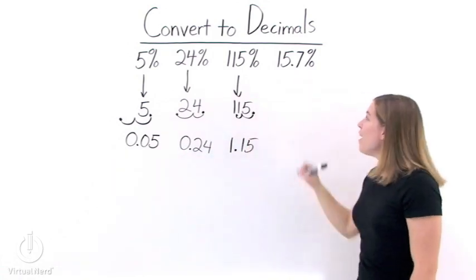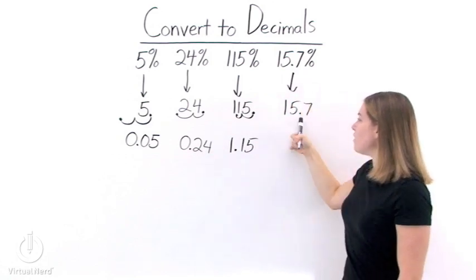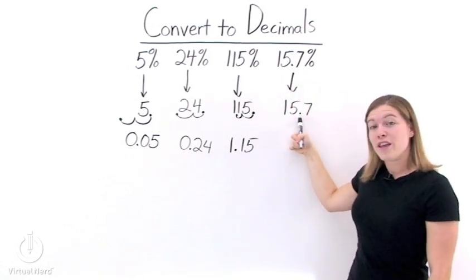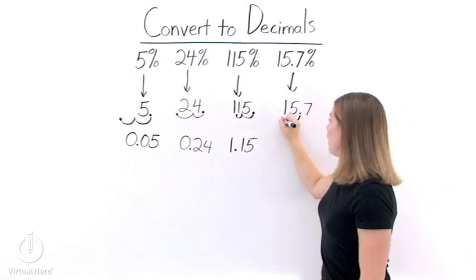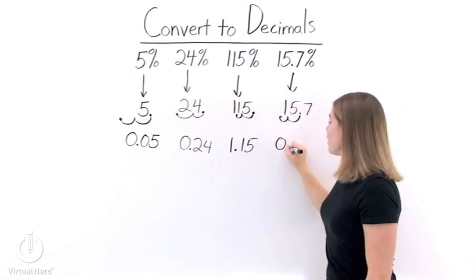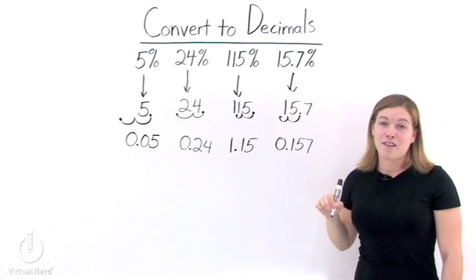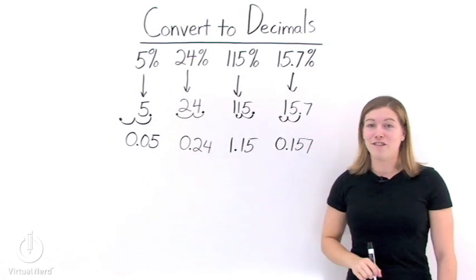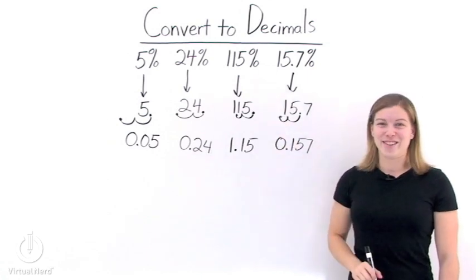Last one, 15.7%. Well, 15.7 already has a decimal in it, so we use that decimal and we move that one two places to the left. One, two, and we get the decimal 0.157. So 15.7% is the same as the decimal 0.157. Now, we've converted all of our percents to decimals.